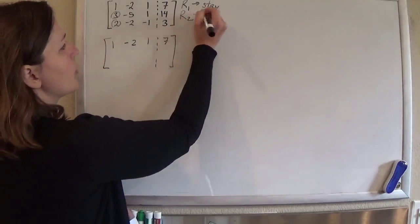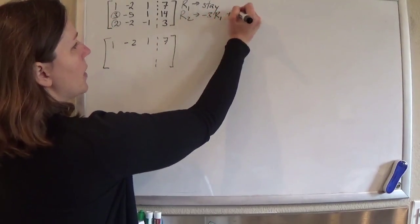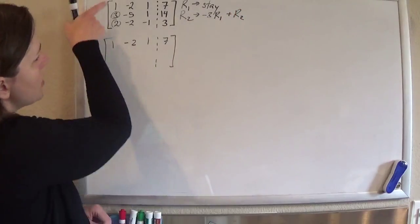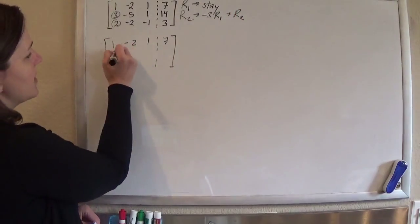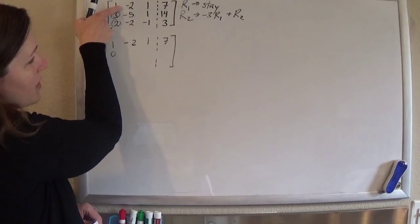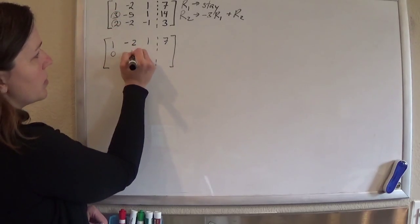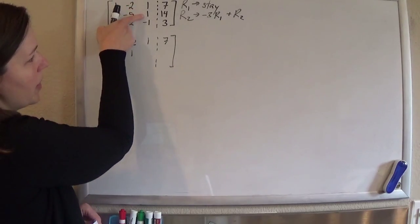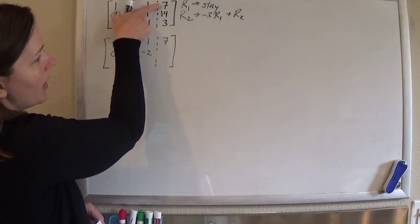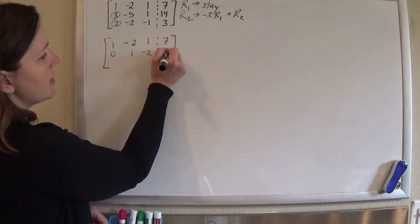So row 2 is going to become negative 3 times row 1 plus row 2. So negative 3 plus 3 is 0 like I planned. 6 minus 5 is 1. Negative 3 plus 1 is negative 2. Negative 14 plus 14 is 0.